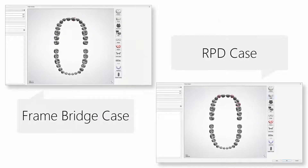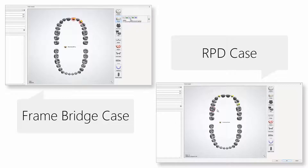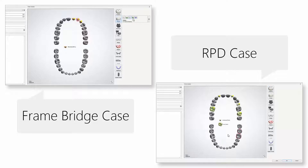While creating a new order form, you need to choose either an anatomical coping or an anatomical pontic, which needs to be part of a frame bridge or RPD structure.